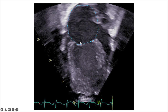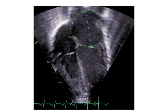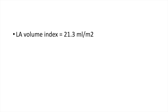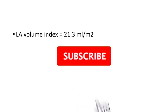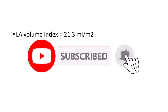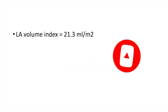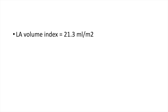For the length of the left atrium, we get it from any of these views. Here I'm getting it from the apical four-chamber view — you can see this is the length. Based on these measurements, the software constructs a 3D shape of the left atrium and estimates its volume. In this example, the left atrium volume index was 21.3, which is a useful number to track during subsequent assessments.